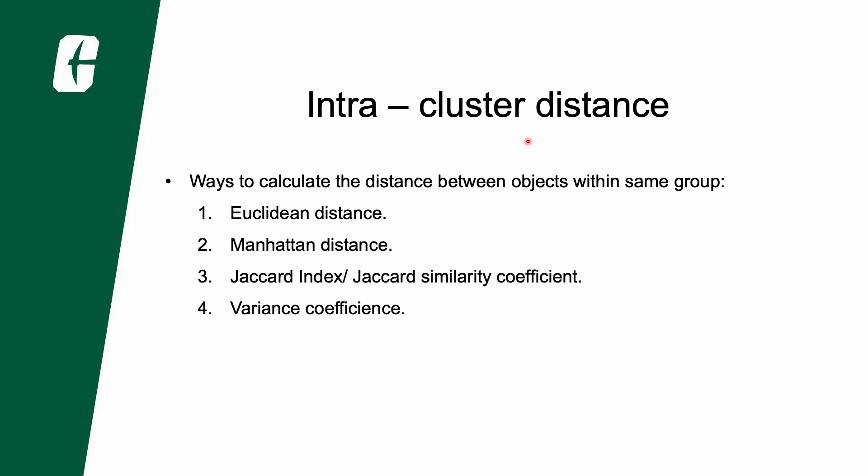Now let's discuss intracluster distance. In order to determine if the objects in space are close to each other or further from each other, we can calculate the distance between them. There are several ways to calculate this distance, among which the most popular one is the Euclidean distance, followed by Manhattan distance, Jaccard index or Jaccard similarity coefficient, and variance coefficient.